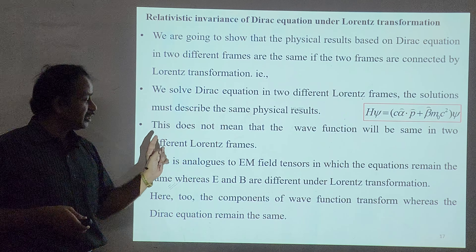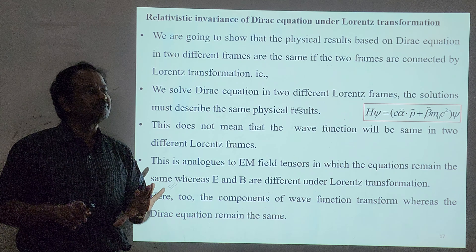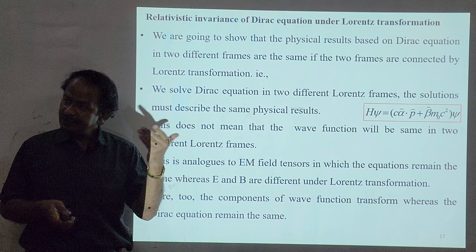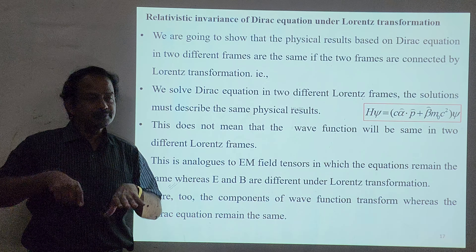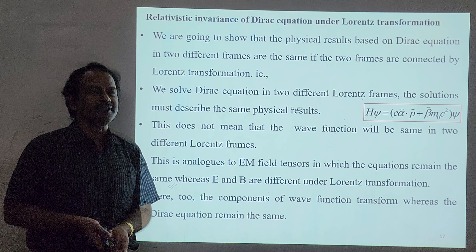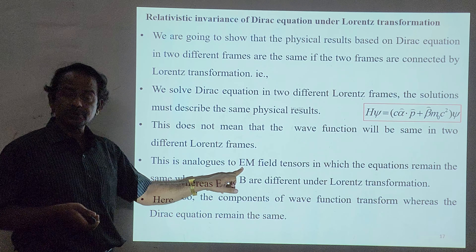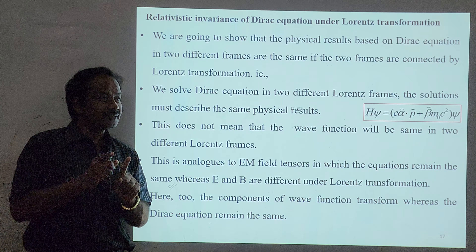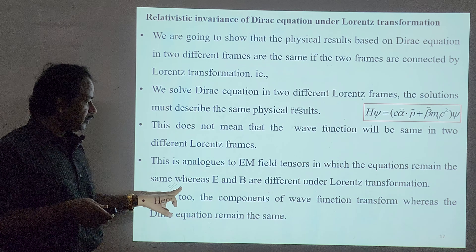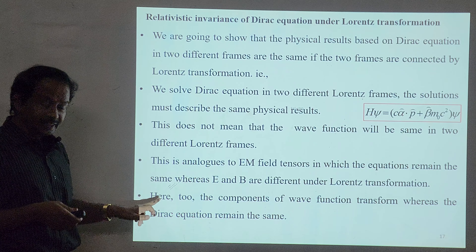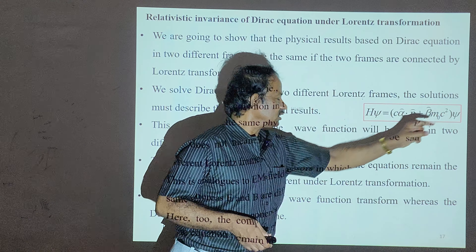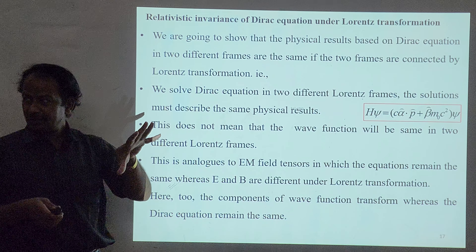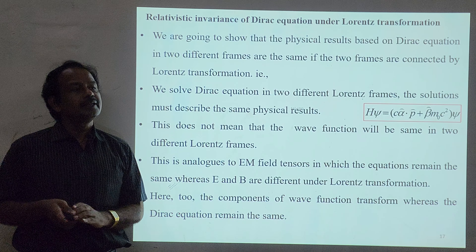This does not mean the wave function psi is the same in two different Lorentz frames — that is very important. The solution psi will be different, just as E and B are different for Maxwell's equations. In one coordinate system it is psi; in another, psi will be different. This is exactly analogous to electromagnetic field tensors: the equations remain the same, but E and B differ under Lorentz transformation. Here, the components of the wave function transform, whereas the Dirac equation remains the same — it is consistent with the special theory of relativity.